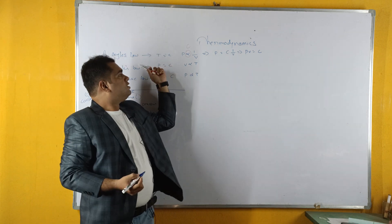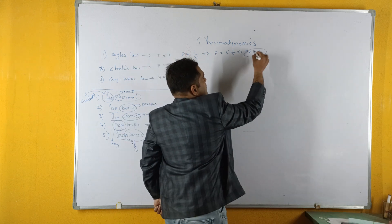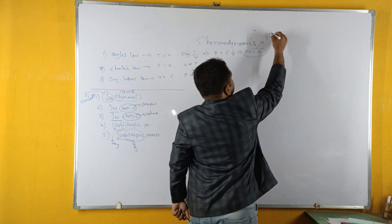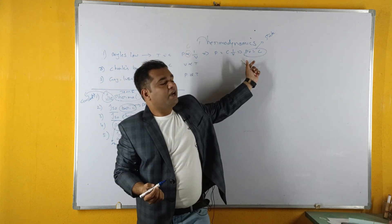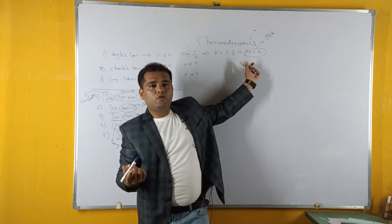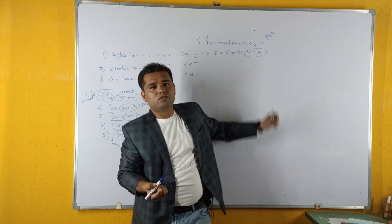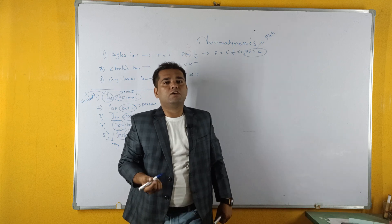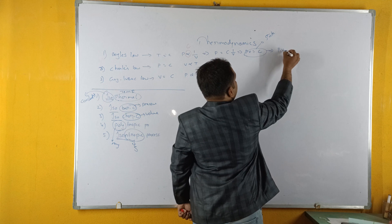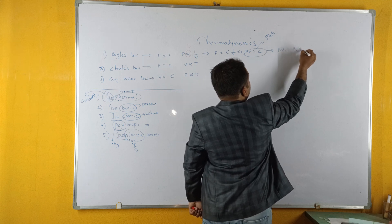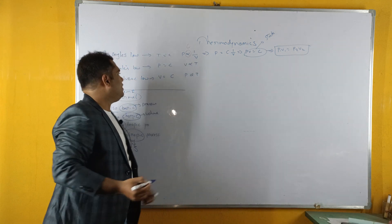PV equals constant relates to one state. If we are going to discuss a process with an initial state 1 and final state 2, we can write it as P1V1 equals P2V2. This is the relation we get from Boyle's law.